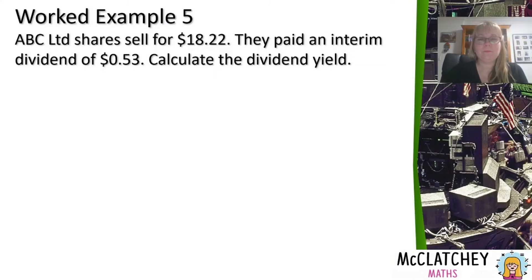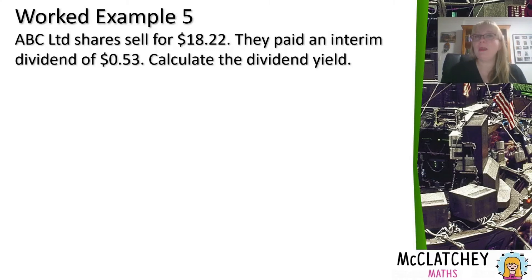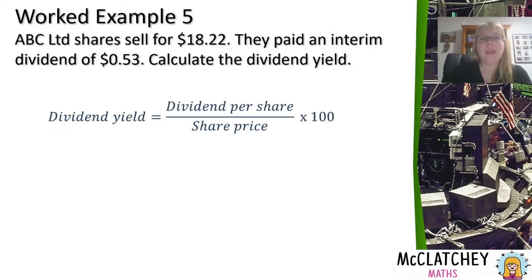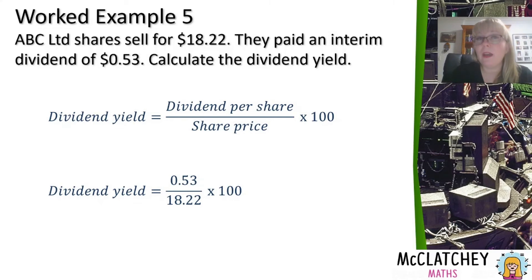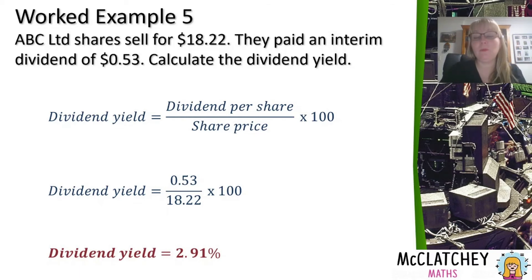In worked example five, ABC Limited shares sell for $18.22. They pay an interim dividend of 53 cents — an interim dividend is one paid during the year, not at the end of the financial year like a final dividend. Companies can pay dividends up to four times a year and those in-between ones are called interim dividends. Substituting into our formula: 53 cents divided by $18.22 times 100 gives a dividend yield of 2.91%. This represents what proportion of the share price is made up of dividends.